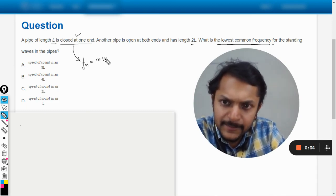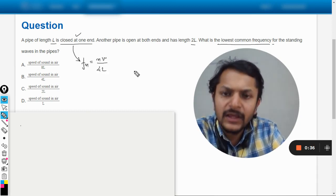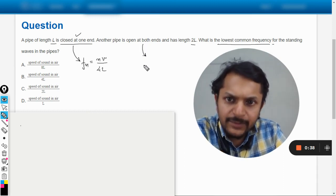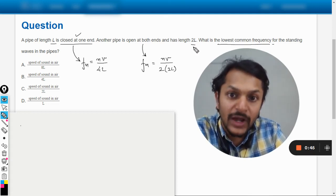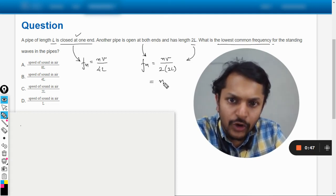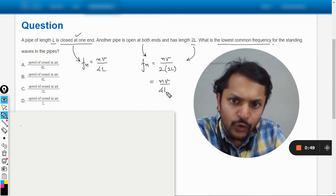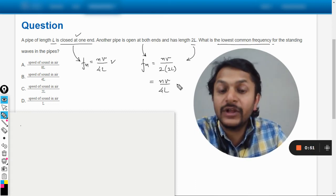be given by the general frequency formula. For this pipe, the formula is V/(2L), and the length is given as 2L here, so it becomes nV/(4L). And this is also nV/(4L). Now what does the question want us to answer?